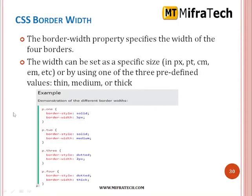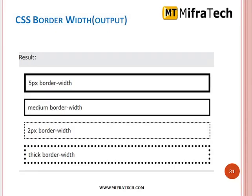Border width — the border width property specifies the width of the four borders. The width can be set as a specific size in pixels, centimeters, pt, or em, or by using one of the three predefined values: thin, medium, or thick. Most often we specify in pixels only. For example: P1 border style solid, border width equal to 5 pixels; or border width equal to medium; or border width equal to thick or thin. Here you can see the 5-pixel border, the medium border, the 2-pixel border, and the thick border represented with dotted style.